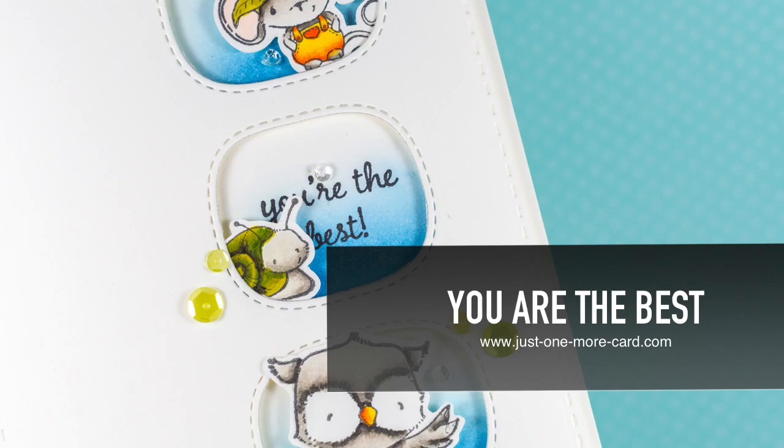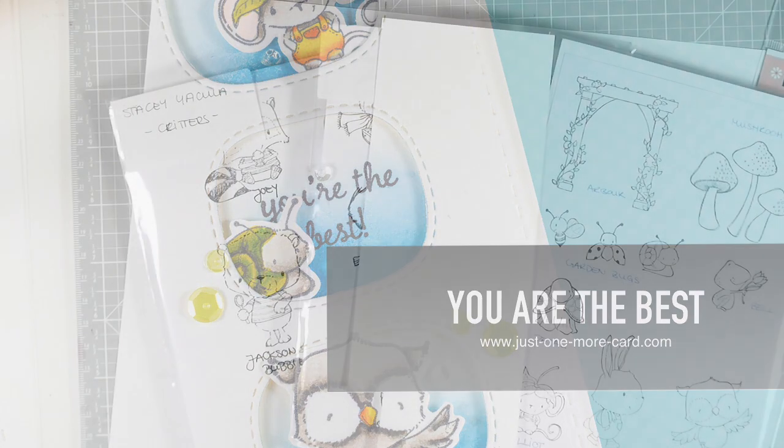Hello everybody, Julia here from Just One More Card and today I want to show you how to create a super cute window card using Purple Onion Designs stamps and dies from My Favorite Things. So let's get started.